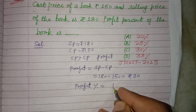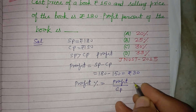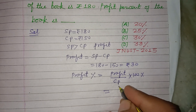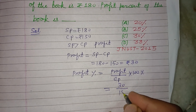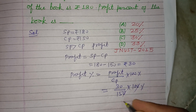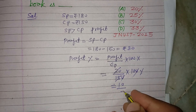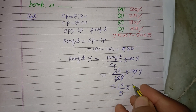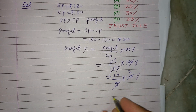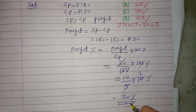Profit percent equals profit upon cost price into 100. So this is 30 upon 150 into 100. Simplifying: 30 and 150 cancel to give 1 and 5, then multiplied by 100 gives 20. So 20 percent is the profit on this book.